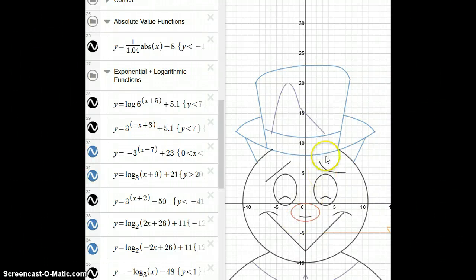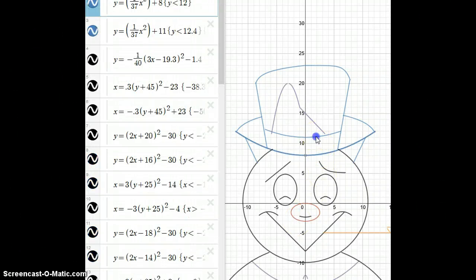For my functions project, I made Frosty. For the bottom of the hat and the top of the slash, I wanted a wide rounded curve, so I horizontally stretched a quadratic equation and vertically shifted it so that it would be just around the top of the head and the area where I wanted the slash to be.